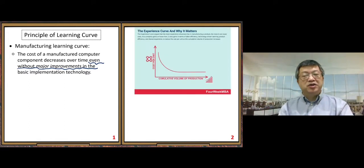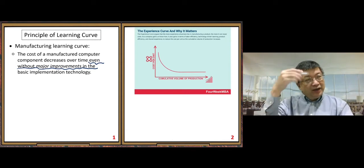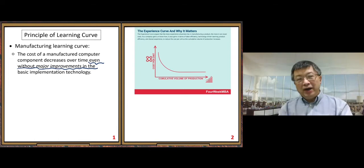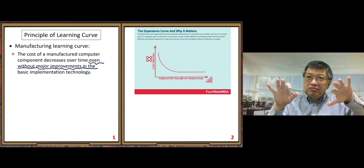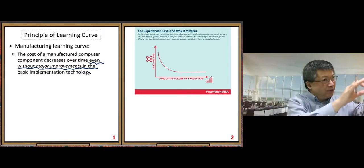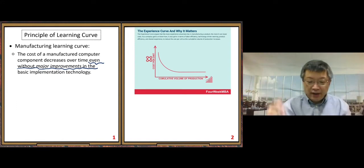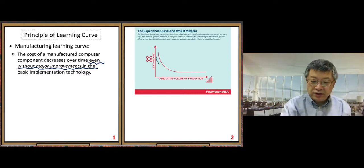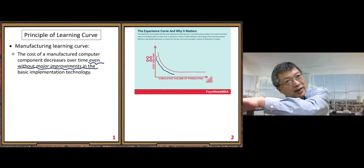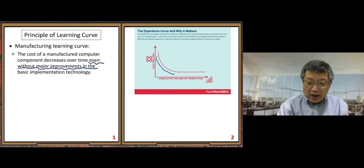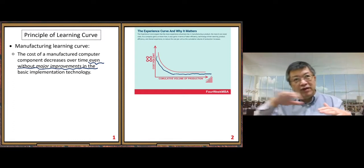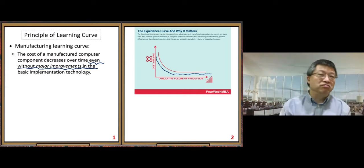Using this picture to illustrate: assuming there is no major technology improvement, as the manufacturing process is developed and fine-tuned in many places, the cost is reduced and keeps going down. However, you cannot reduce it indefinitely — at some point the curve becomes very flat.